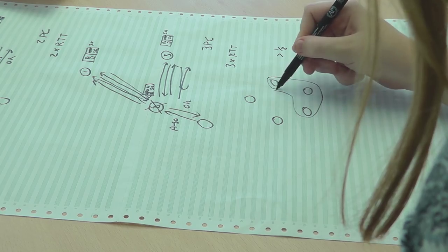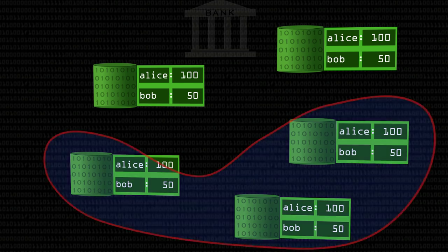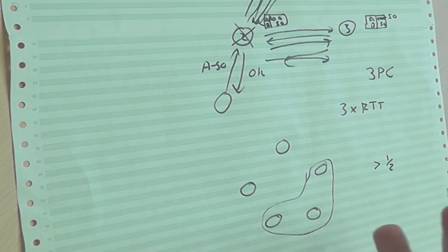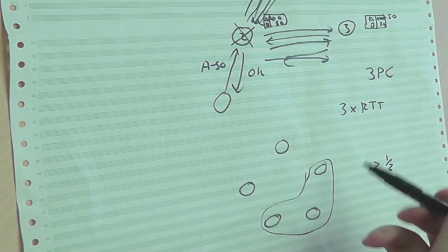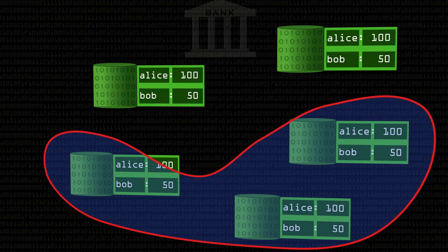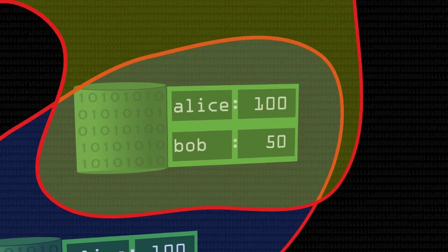If you always work with a majority, you get an interesting property called the majority intersection property. This means that if you pick any two majorities, there will always be an overlap of at least one node. So with five nodes, if you pick three of them — which is a majority — you can't make another set of three without including at least one node from the previous set. So this means if a group of three nodes decided that Alice took £50 out, and then you try to take another £70 out, at least one of the nodes involved must have seen that Alice has already taken out £50.